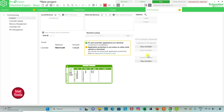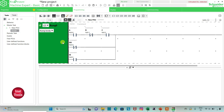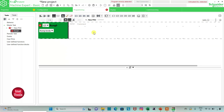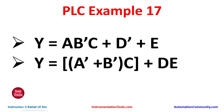I will go to Programming, delete this rung, and add a new rung. Here I will draw the ladder diagram for the next Boolean expression: Y = (A' + B')(C + DE). In this case, we will use normally open contacts for C, D, and E, and normally closed contacts for A and B. Firstly, we will implement an OR gate with inputs A' and B', then connect input C in series with A' + B', and then in parallel to (A' + B')·C we will connect D and E in series.